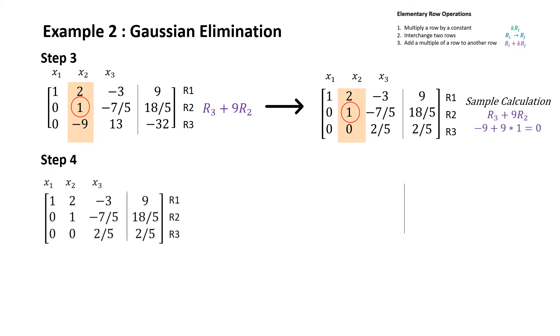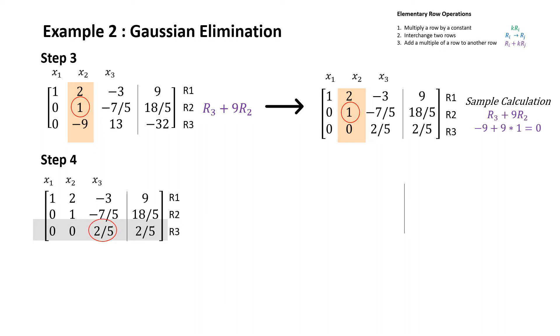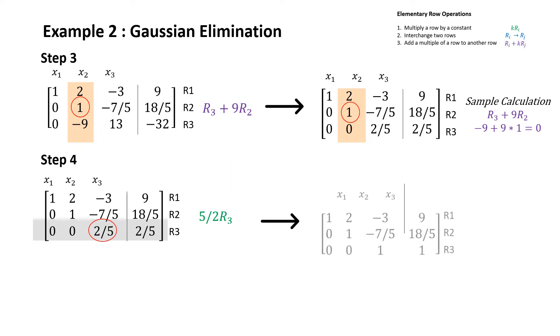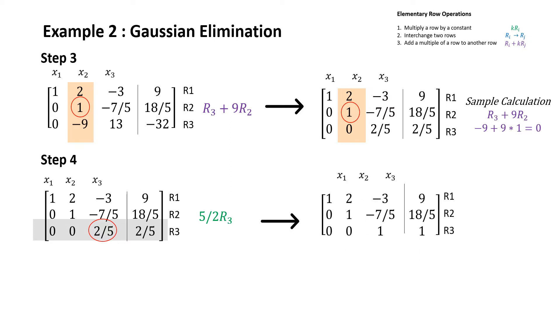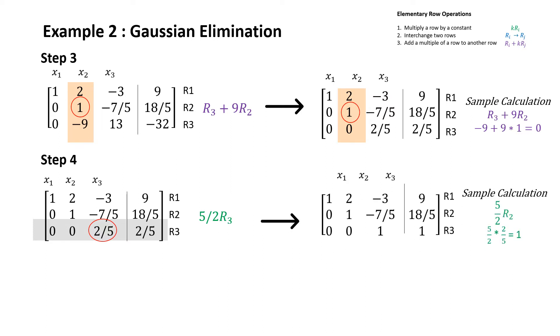Next we want to transform the matrix to obtain a 1 in the pivot position. Therefore we will multiply the pivot row by a constant to obtain the matrix on the right, and there is a sample calculation provided.